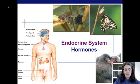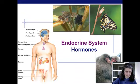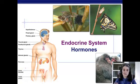The introductory slide shows the glands. The endocrine system is a system of glands that produce hormones — chemicals that send signals throughout the body.